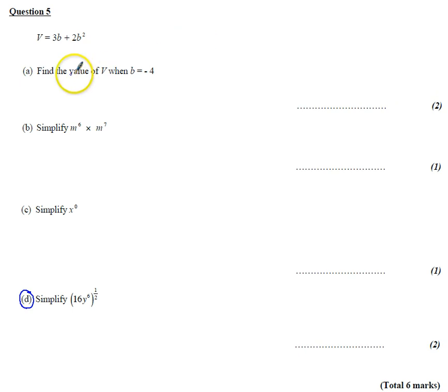Part A, we've got this formula here, want to find the value of P when b is minus 4. Well, 3b is 3 times minus 4, which is, well, 3 times 4 is 12, so minus 12.